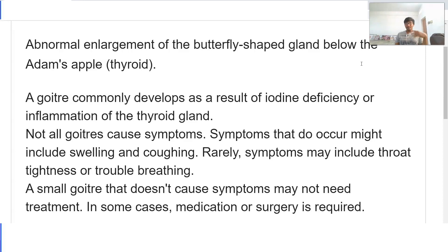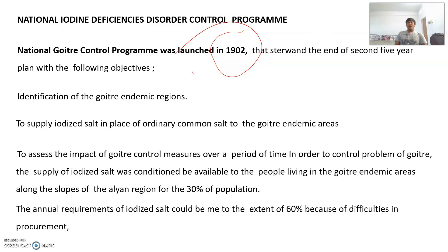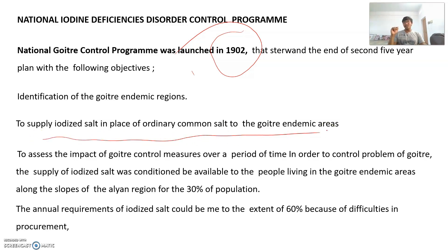In some severe conditions, surgery may be needed. The National Goiter Control Program was launched in 1962 at the end of the fifth five-year plan. Its objectives were to identify goiter endemic areas, to supply iodized salt since iodine deficiency is the major cause of goiter, and to assess the impact of goiter control measures over a period of time.